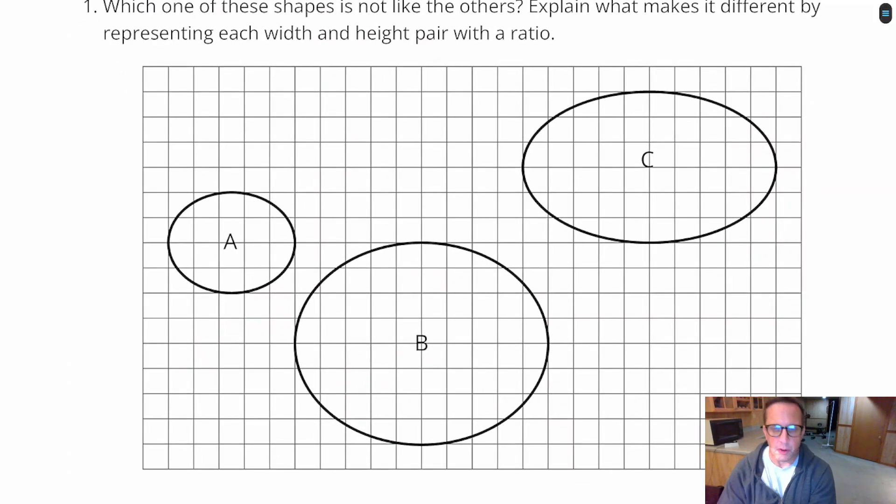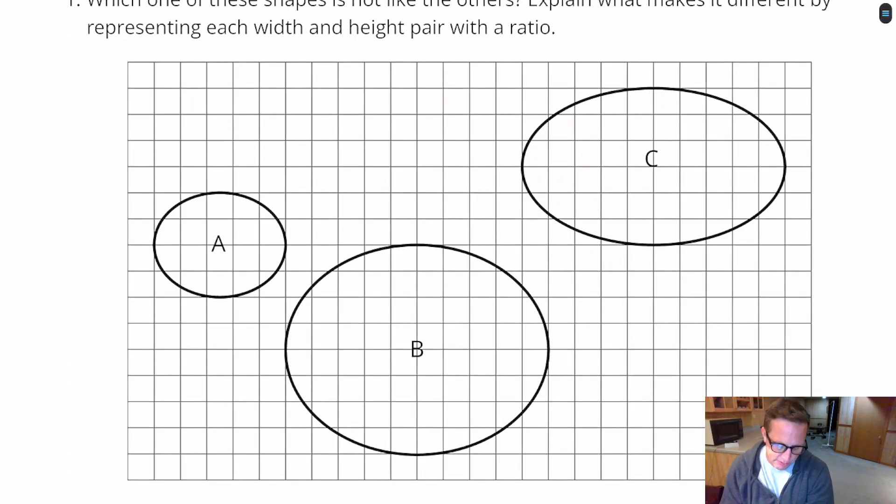Okay, so these are all ovals. They're not circles, because circles are exactly as wide as they are tall, equidistant from the middle, but they're ovals. The thing that I see here is they have a width and they have a height. They have differing widths and heights because they look a little stretched out, like a circle that was sat on.